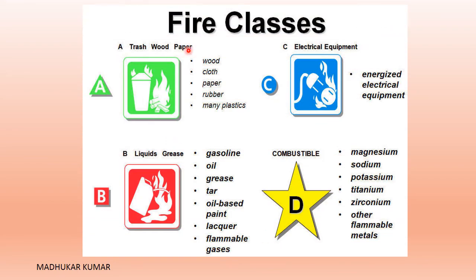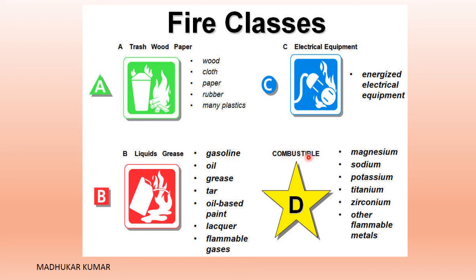You can see the fire classes in pictorial form. Class A covers solid carbonaceous materials — wood, cloth, paper, rubber, and other plastics. Class B covers liquids and gases both: gasoline, grease, tar, oil, paints, and lacquers. Class C is energized electrical equipment and fires caused by electricity. Class D is combustible metals: sodium, magnesium, potassium, titanium, zirconium, and other flammable metals. Class K, not shown in the figure, is cooking grease, fat, and oil.